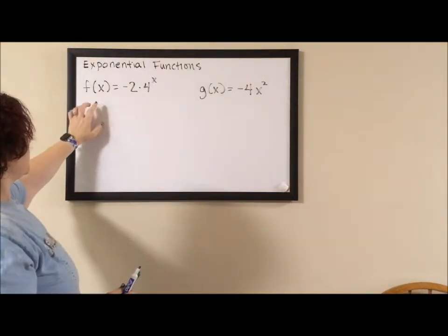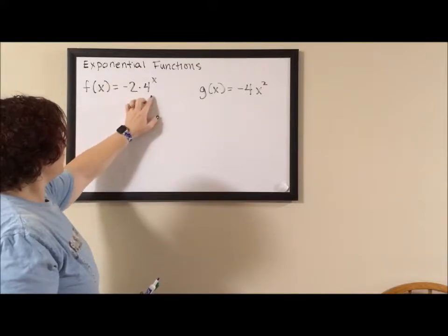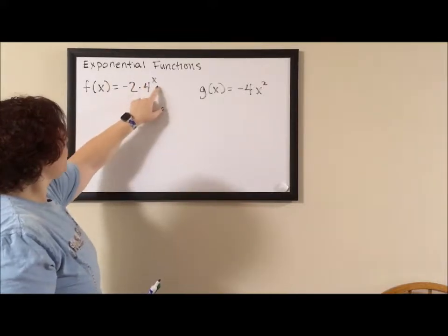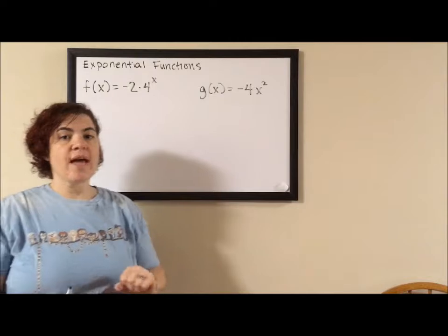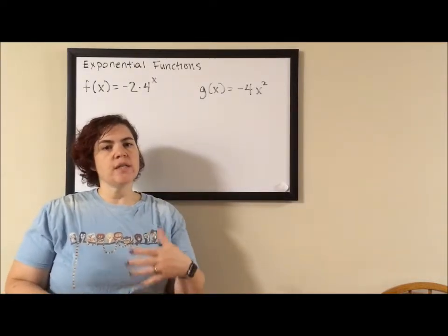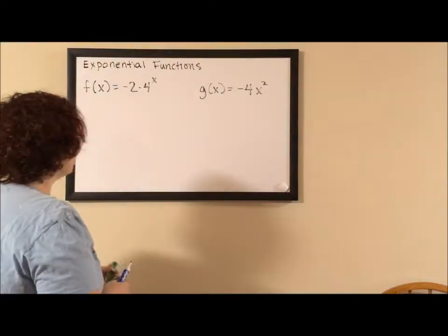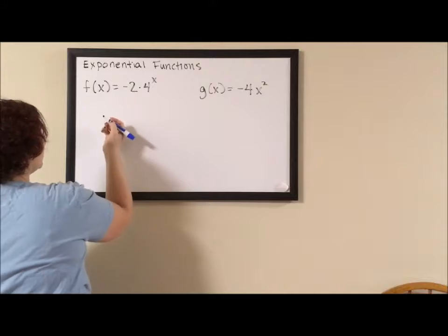In this first equation, we have negative 2 and then we have 4. They're being multiplied, but the 4 has an exponent of x. A key characteristic of an exponential function is the exponent has to be your variable. So this is an exponential function.